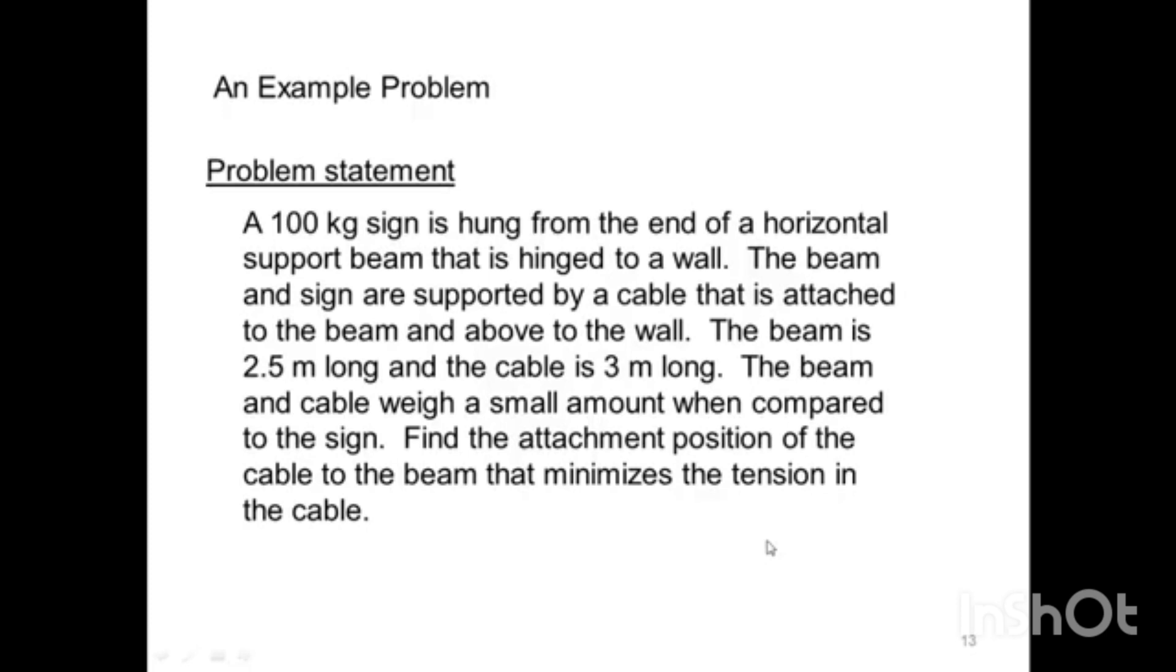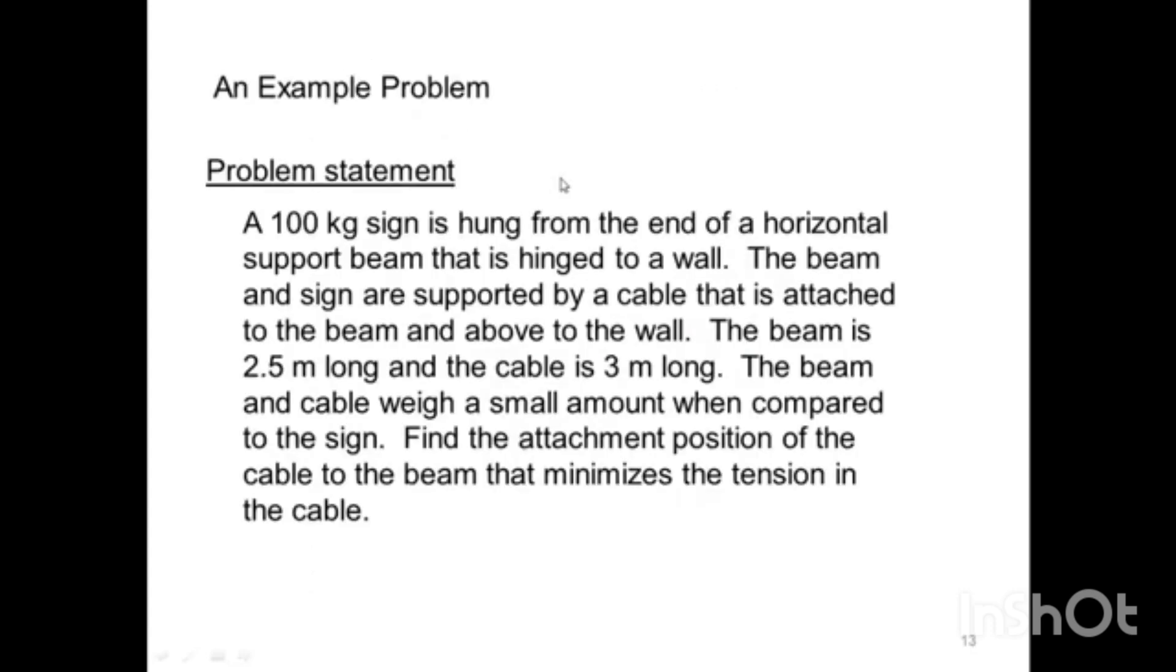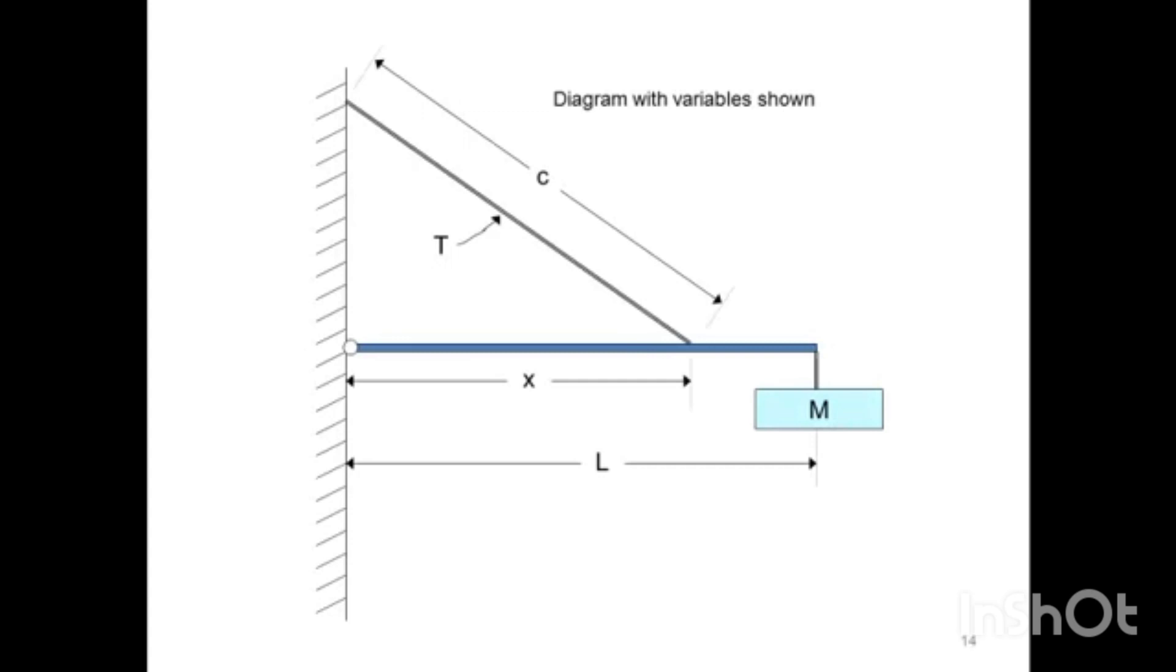It always helps to draw a diagram. We've got a wall over here on the left, a beam that's hinged, and a cable here. The cable has length C, which for this particular example is 3 meters. The beam is 2.5 meters long and the cable is 3. The length of the beam, big L, is 2.5 meters.